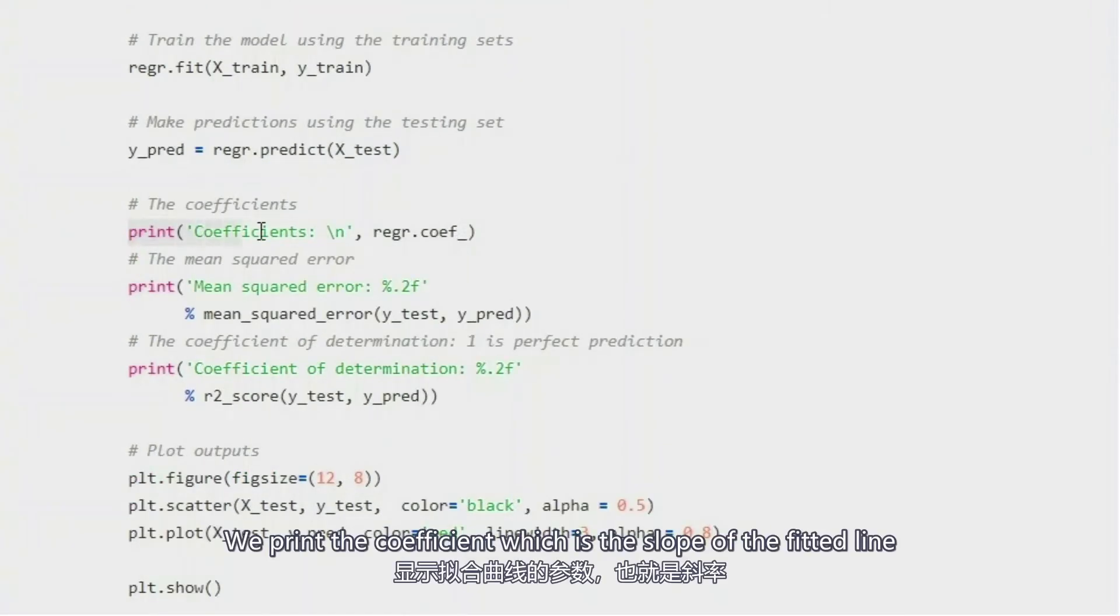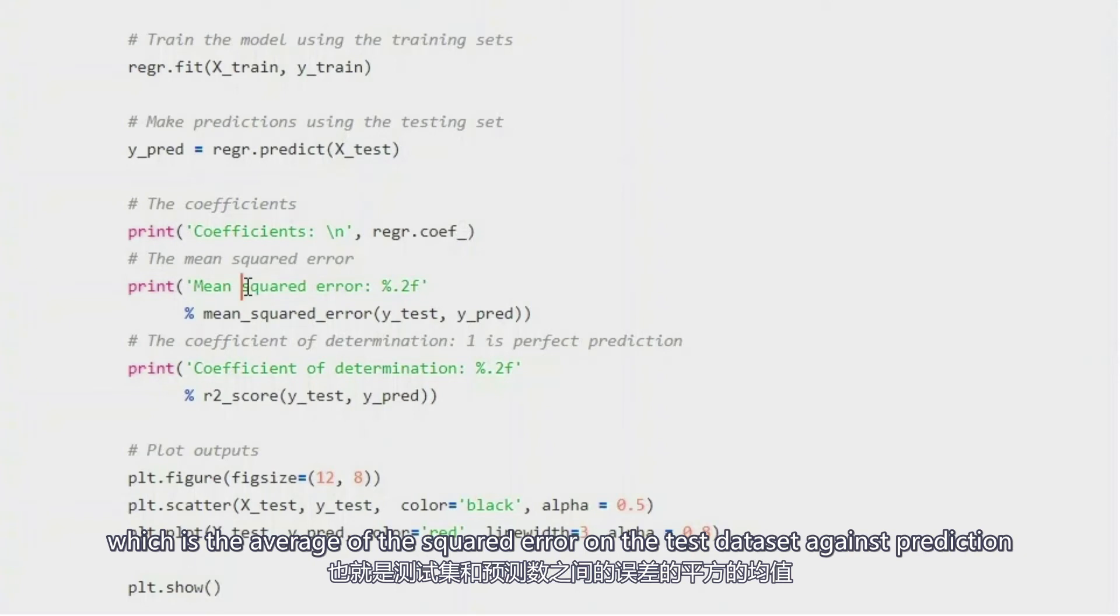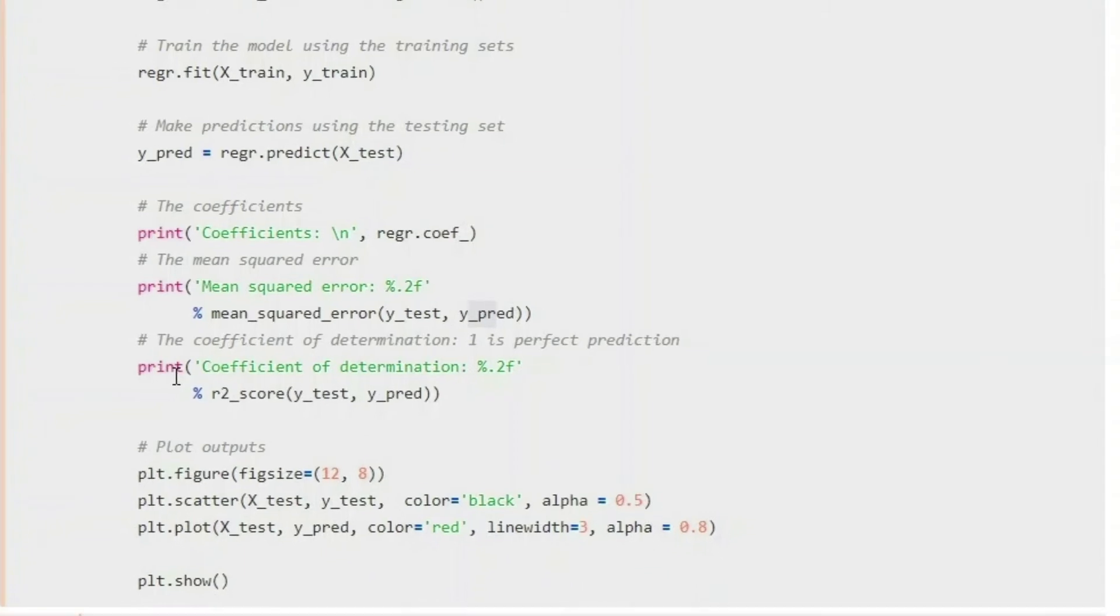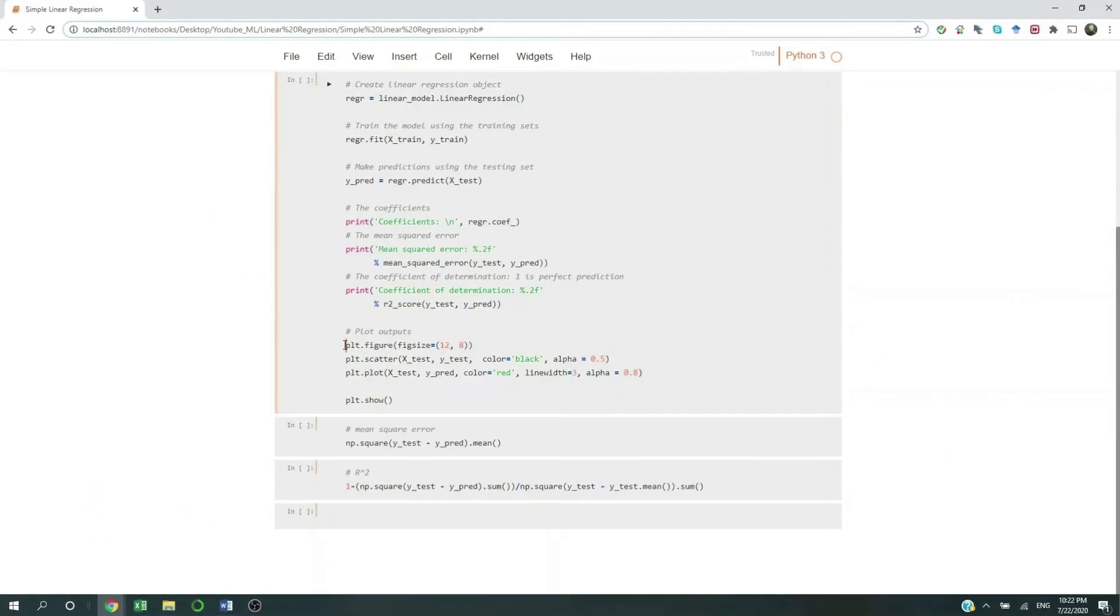We print the coefficient, which is the slope of the fitted line. We print the mean squared error, which is the average of the squared error on the test data set against the prediction. And then we also print the r square value. Let's plot it.